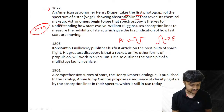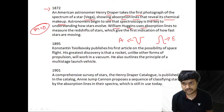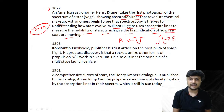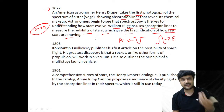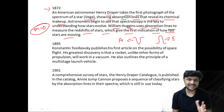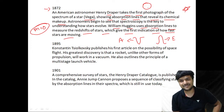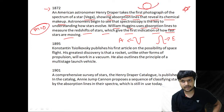Using spectroscopy, William Huggins uses absorption lines to measure the redshifts of stars, giving the first indication of how fast the stars are moving. This relies on the Doppler effect — just as we have Doppler effect in sound, we have it in light. If a star or planet is coming towards you, the light is blue-shifted; if it is moving away, the spectral lines are red-shifted.